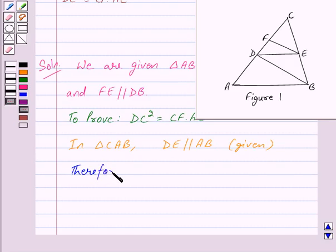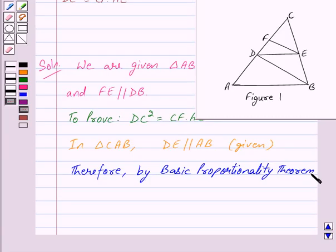Therefore, by the Basic Proportionality Theorem, which states that if a line is drawn parallel to one side of a triangle, the other two sides are divided in the same ratio, we have DC/AC = CE/BC. We mark this as Equation 1.